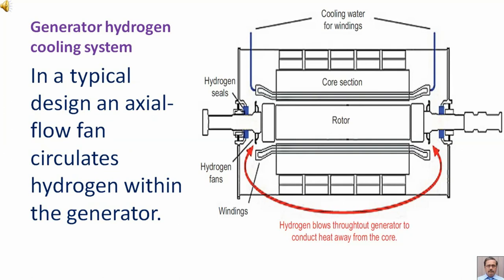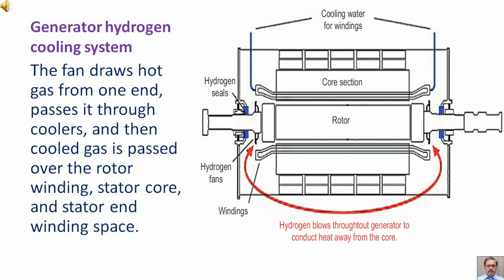In a typical design, an axial flow fan circulates hydrogen within the generator. The fan draws hot gas from one end, passes it through coolers, and then cooled gas is passed over the rotor winding, stator core, and stator end winding space.